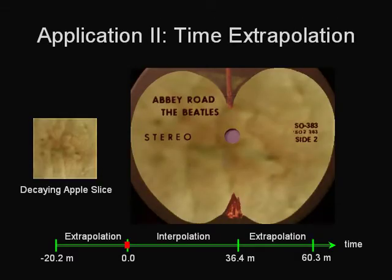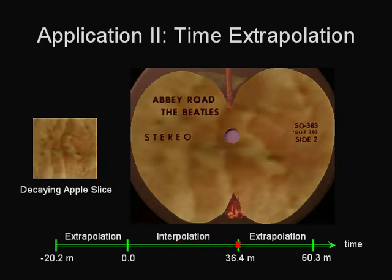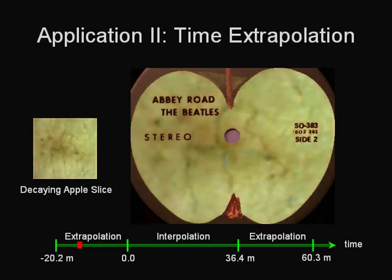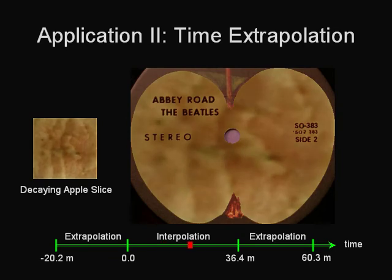In this example, we combine time varying appearance from the decaying apple dataset with standard static texture mapping to allow the Beatles record album to decay over time. Our STAF model allows us to extrapolate beyond the acquired data, in this case to see the greener appearance of the apple before the start of data acquisition.